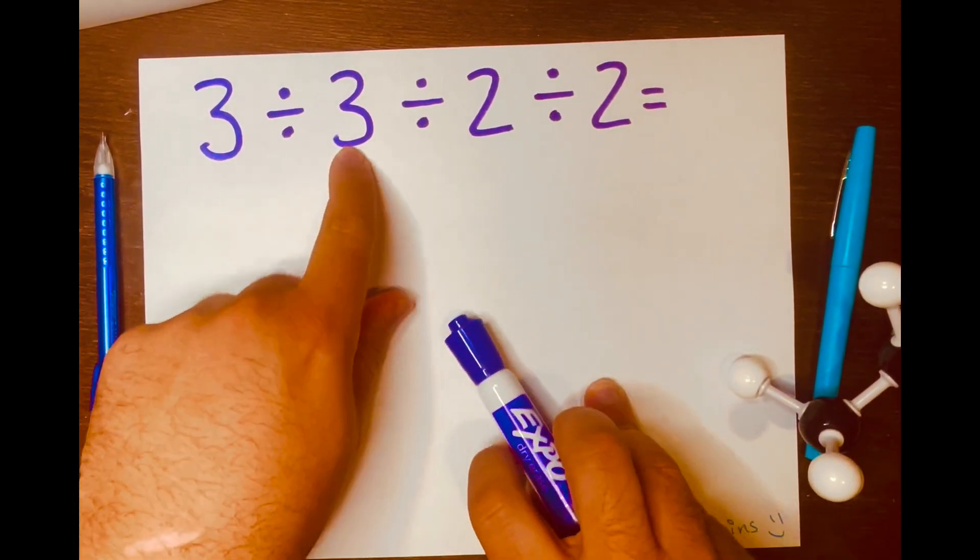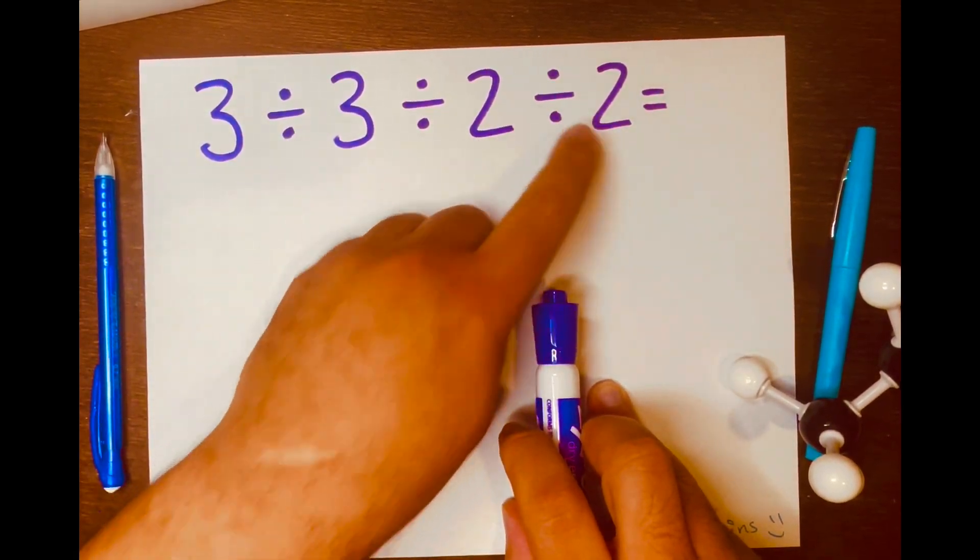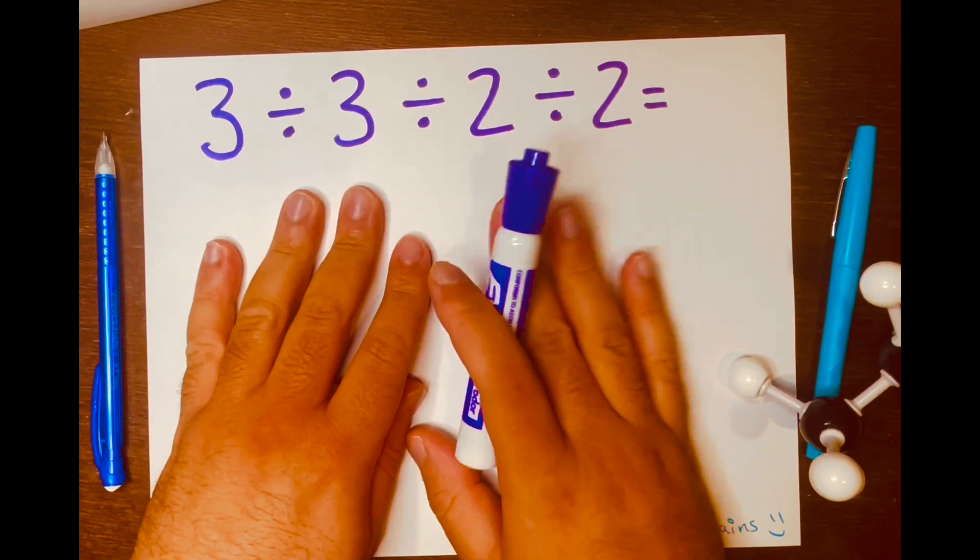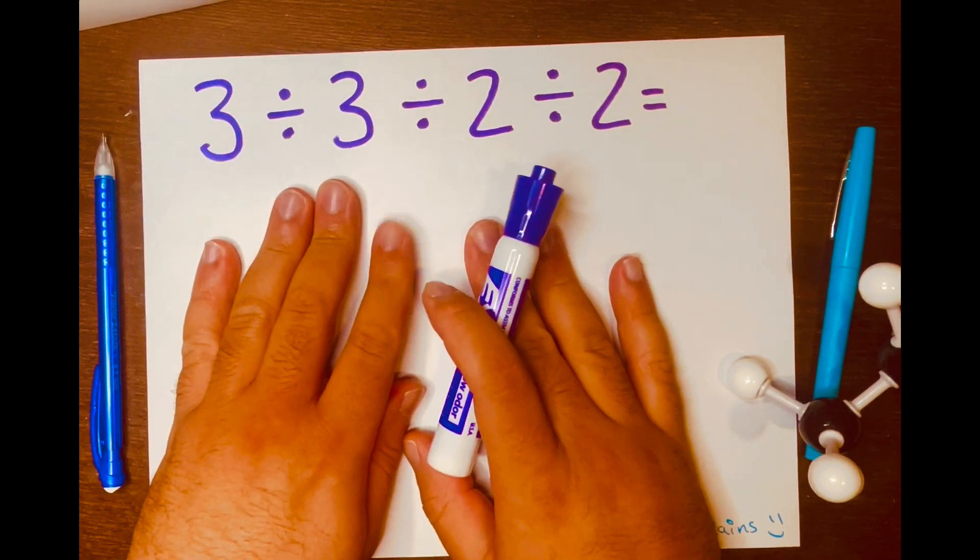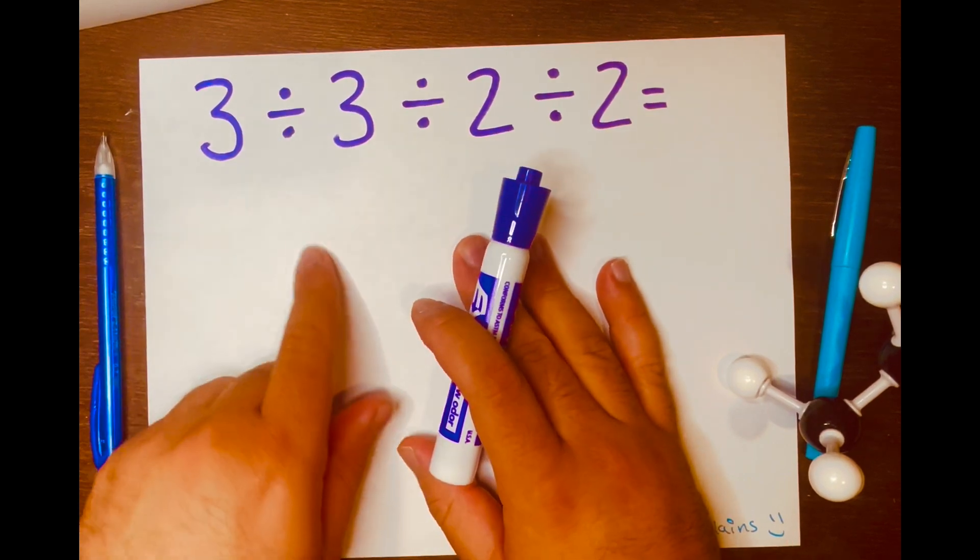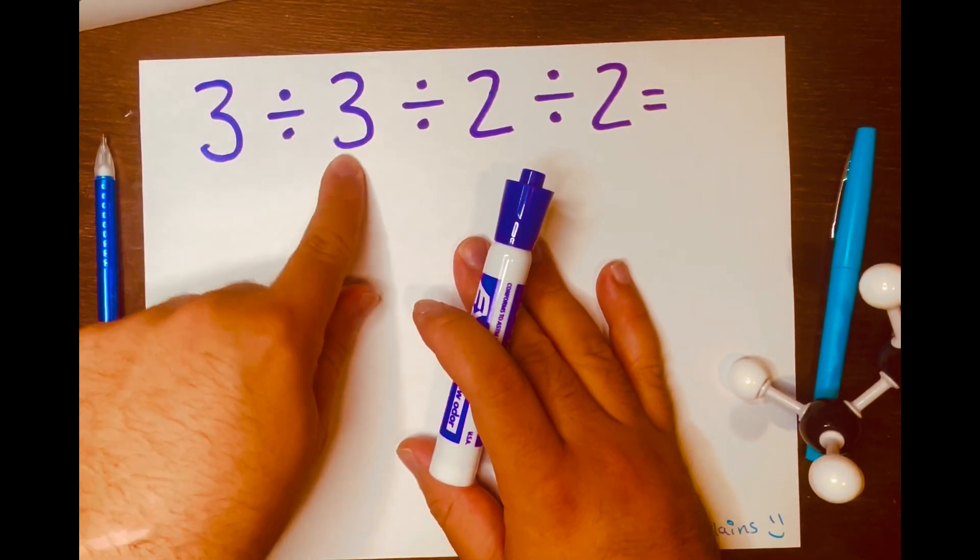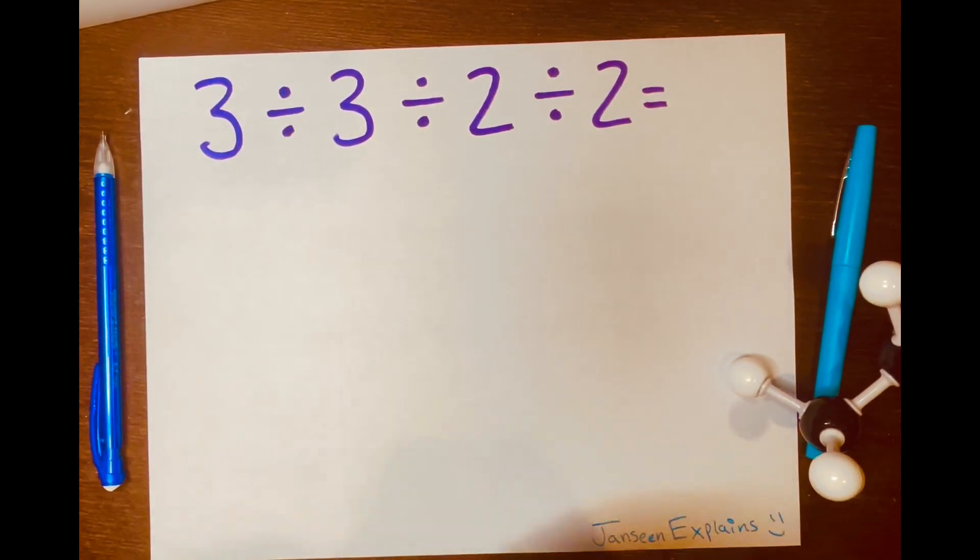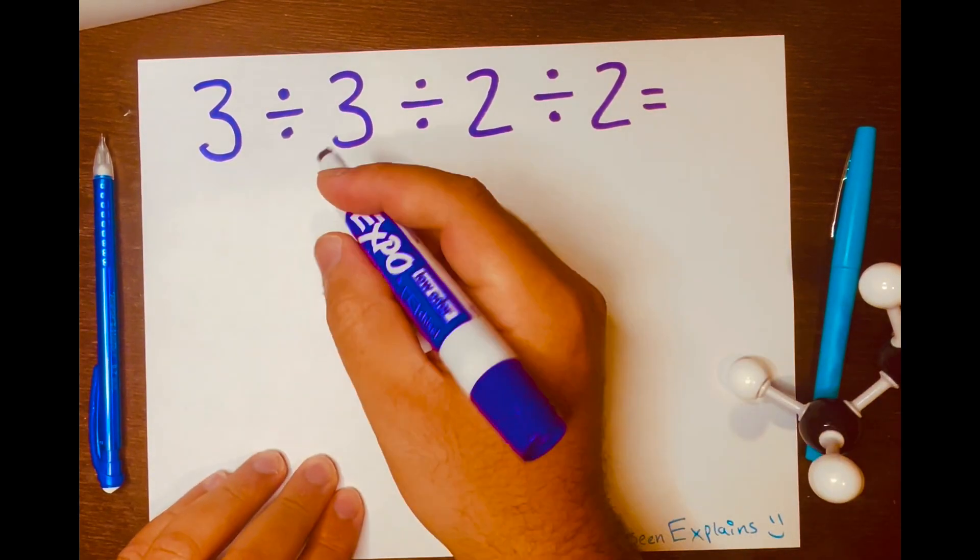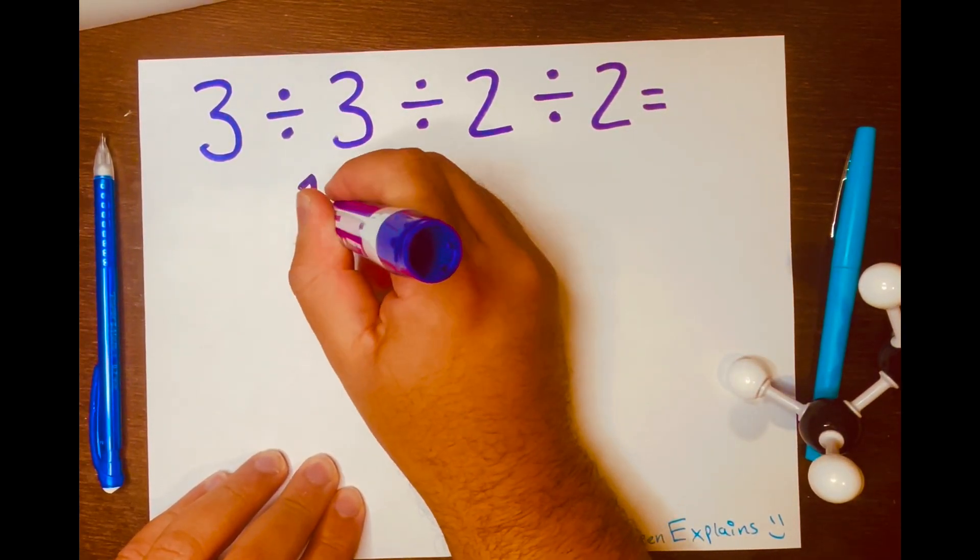3 divided by 3 divided by 2 divided by 2. Now I'm thinking of PEMDAS and we work from left to right and 3 divided by 3 will go first. And 3 divided by 3 equals 1, right? So I'll write 1.